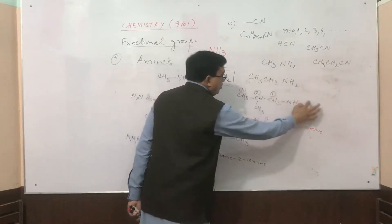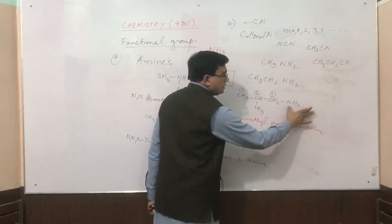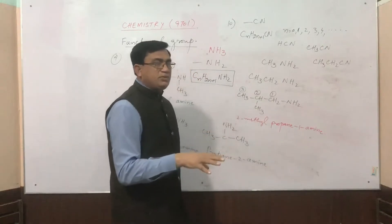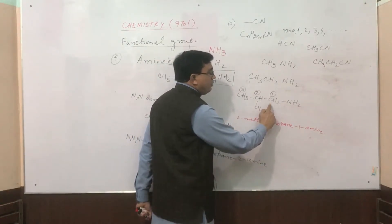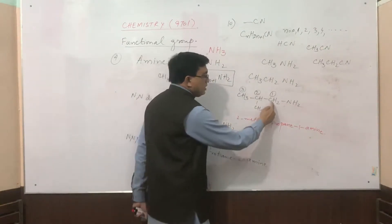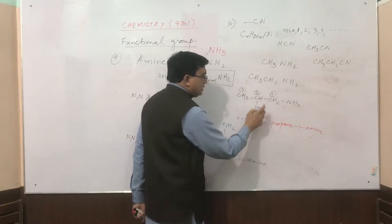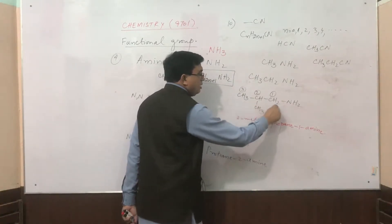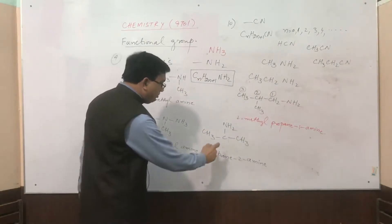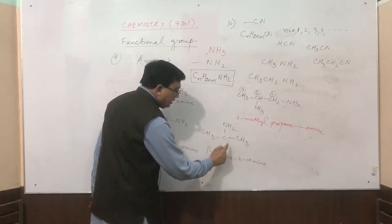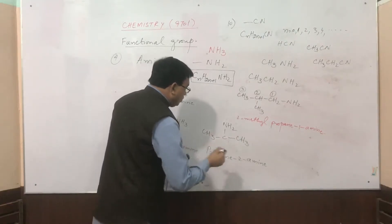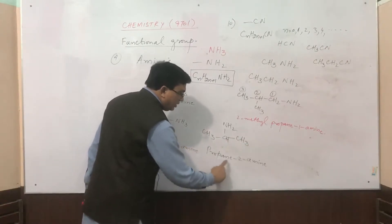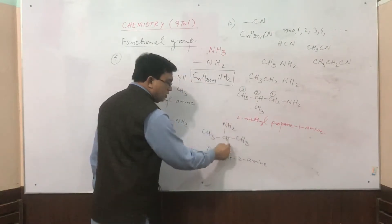Now if we want to name this organic amine, due to the presence of this NH2 group, this is an amine. But as there is a branch present in this formula, you will number the carbon atom from the side of the functional group. This is carbon number 1, this is 2, this is 3. To name this, we call it propan-1-amine, because 3 carbon atoms are present. If we consider carbon 1, 2, and then 3, the name becomes propan-2-amine due to the functional group position.